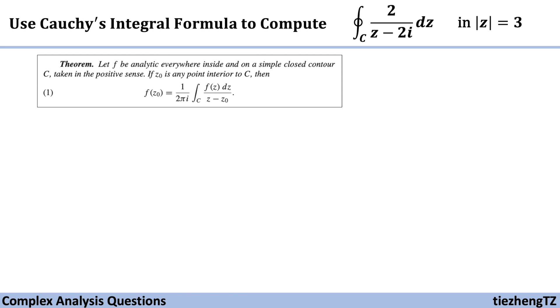But back to our question today, the Cauchy's integral formula. We need to find the f function, which is analytic everywhere inside and on a simple closed-contour C. We also need to find the appropriate point z0, which is interior to C.